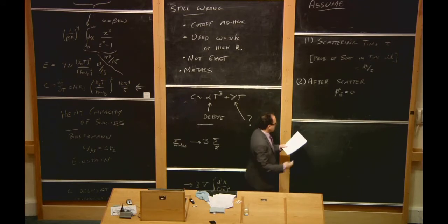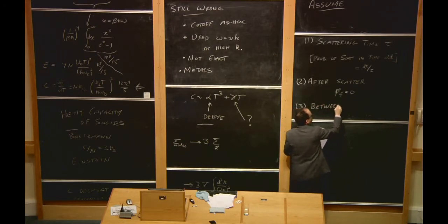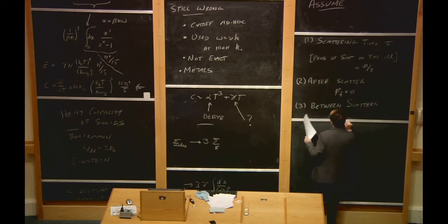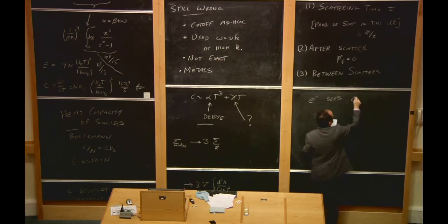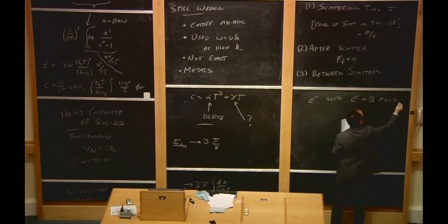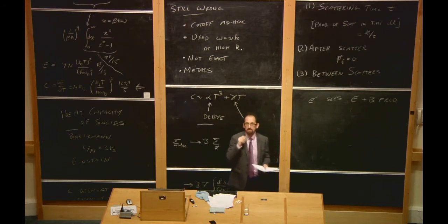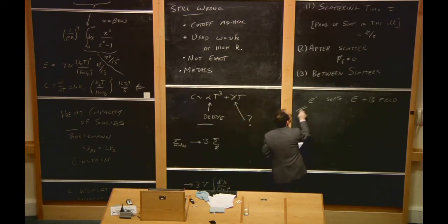The third assumption is that the electron sees E and B fields if they happen to be present. If you apply an electric field, the electron accelerates; if you apply a magnetic field, it curves — just as if the electron were in a vacuum. Given these three assumptions, we can calculate how the momentum evolves.